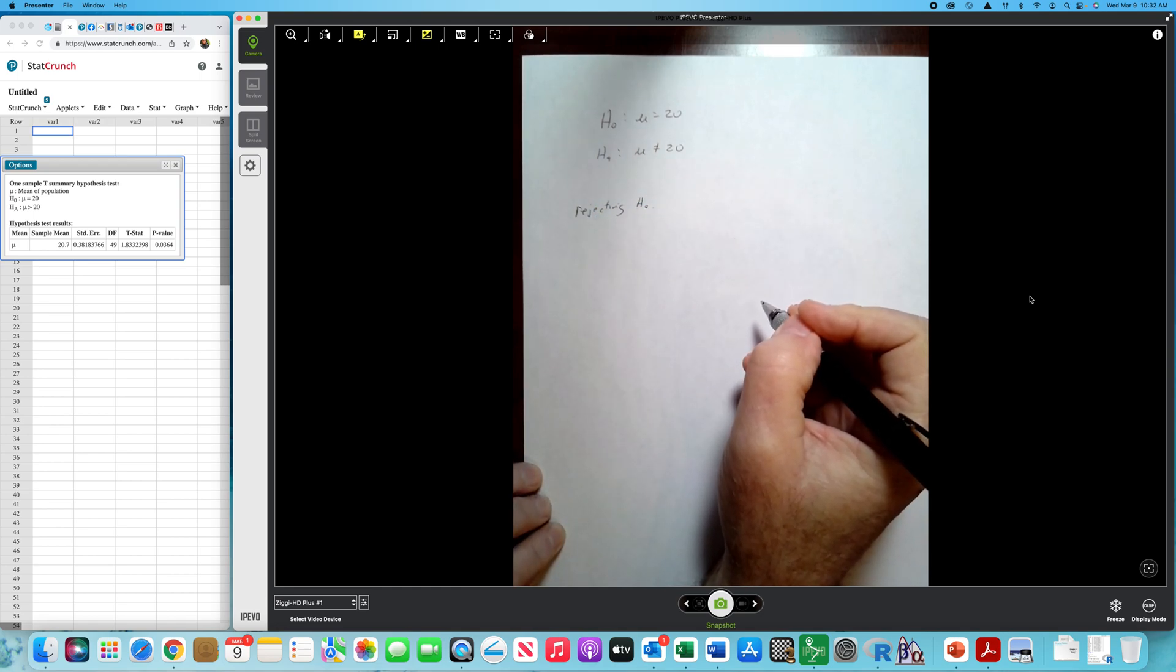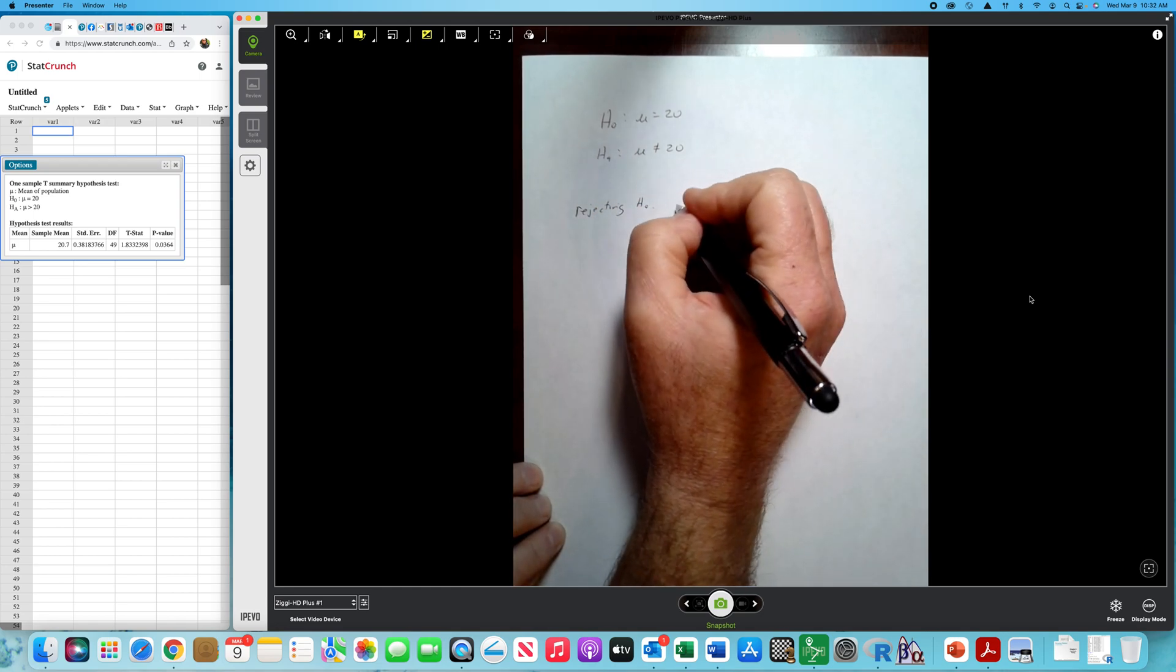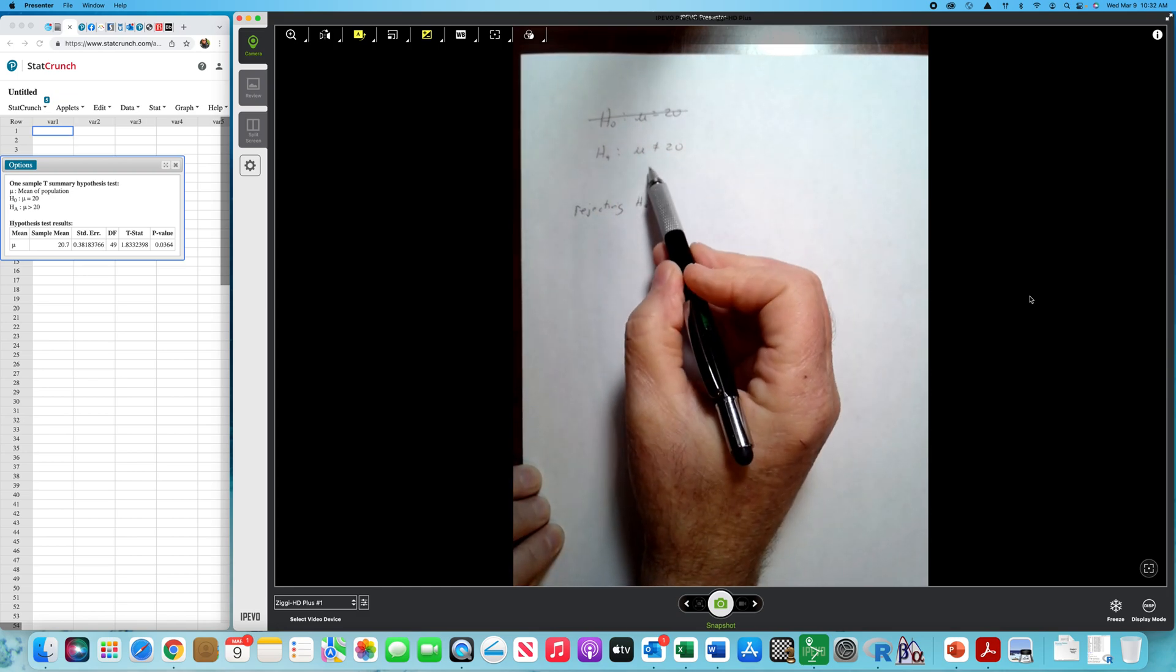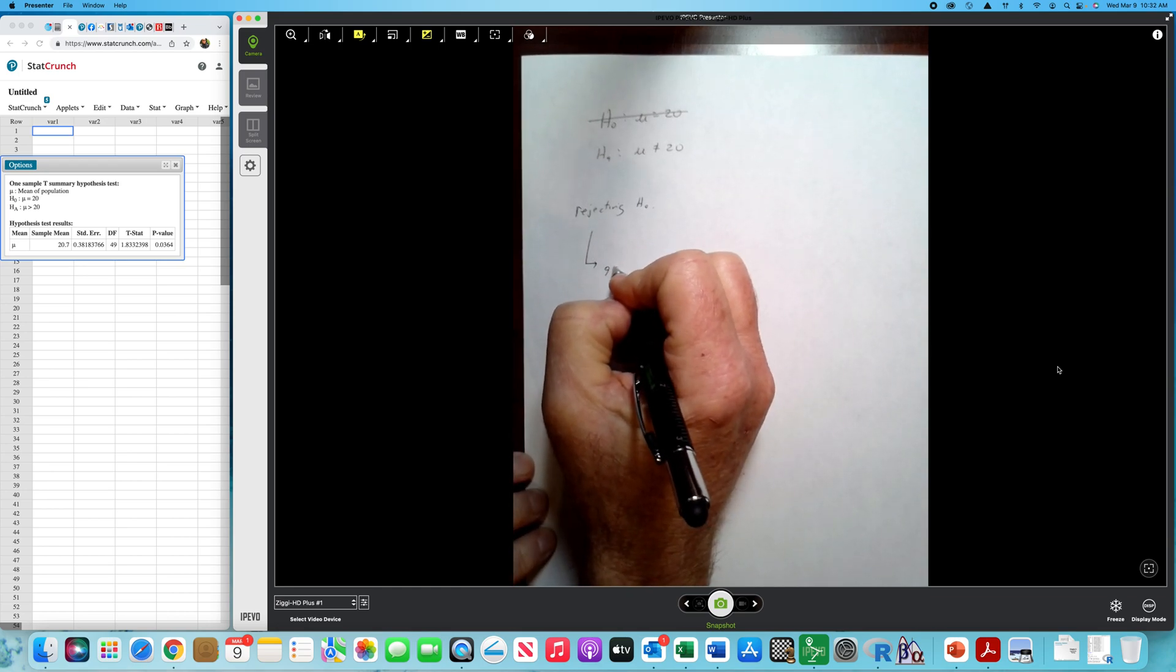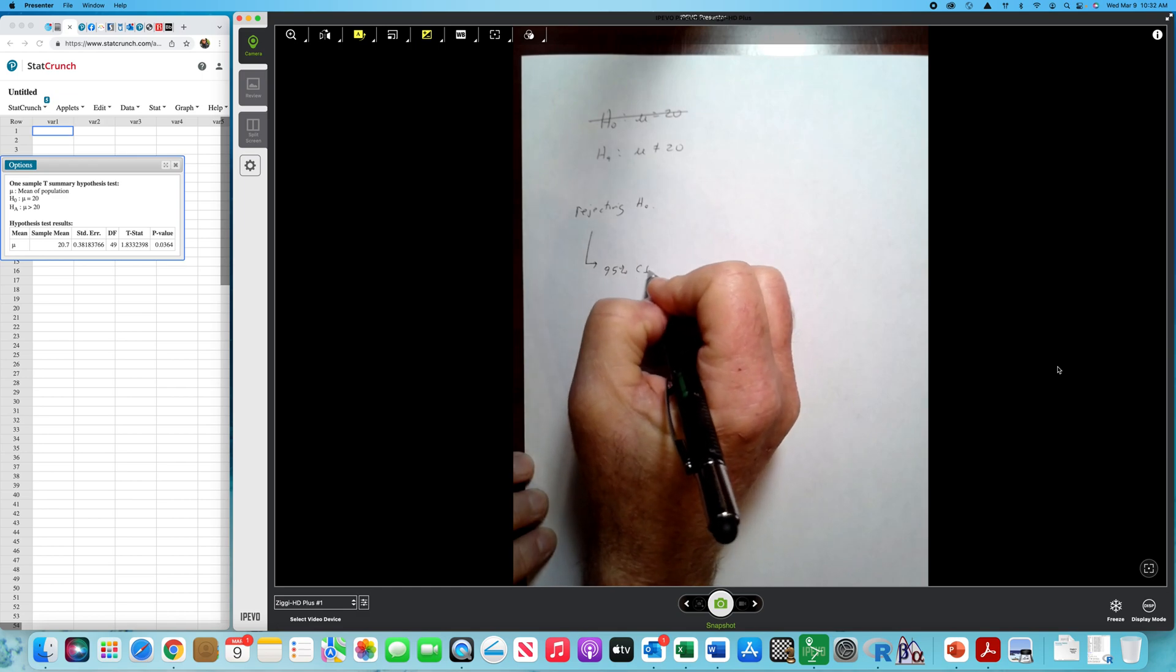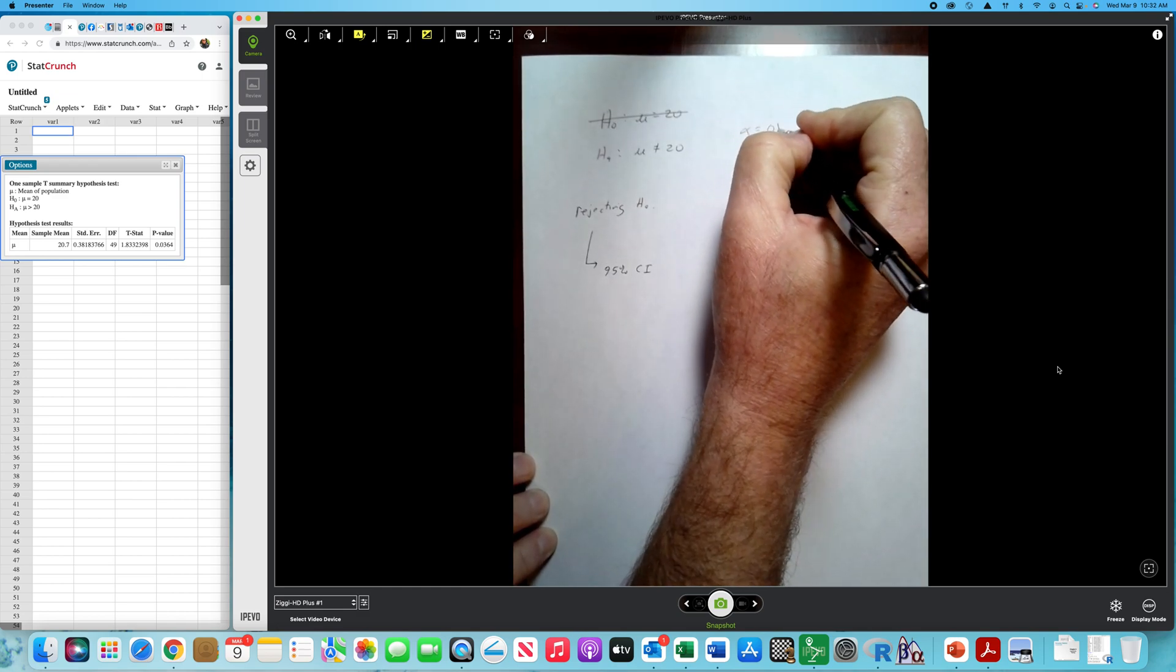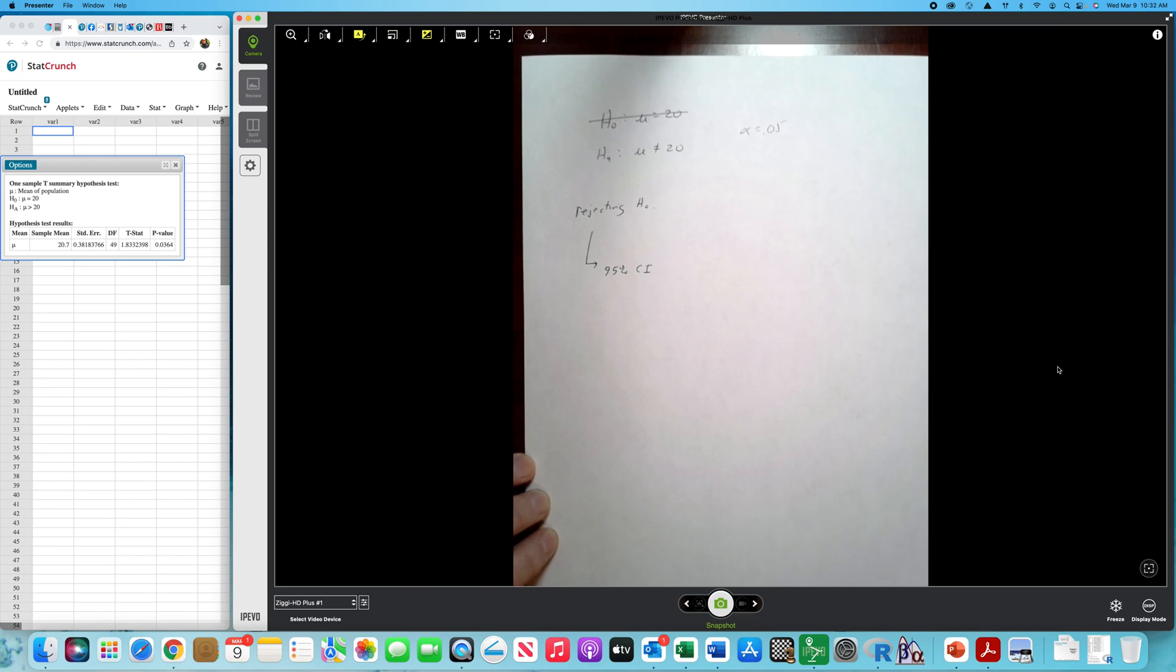So if we reject the null, what does it tell us? We don't believe that statement. We believe that the mean is not equal to 20. Well, I don't know about you, but just a statement, the mean is not equal to 20, doesn't give me any indication of what the mean is. And not equal to 20. Well, is it 25? Is it 12? Is it negative? Is it 5? A lot of unanswered questions. Well, what I would do next is I would follow up with a 95% confidence interval, again, assuming this is 0.05, the level of significance is 0.05.